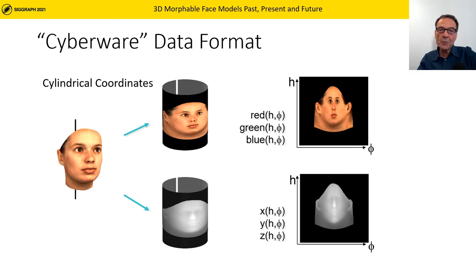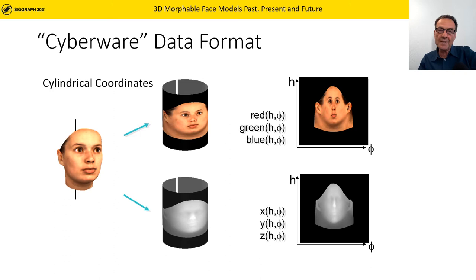Therefore, it was easy to transfer all the 2D image processing methods onto 3D surfaces. We computed the correspondence between two scans using an optic flow algorithm from Bergen and Hingorani from 1990. For merging different facial parts, we applied the Laplacian pyramid approach of Burt and Adelson from 1983. Instead of directly computing on the 3D mesh, performing computation on a parametric surface representation currently sees a strong revival in the neural network literature for face modeling.